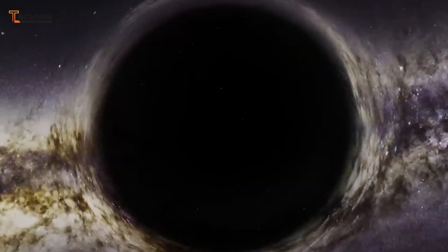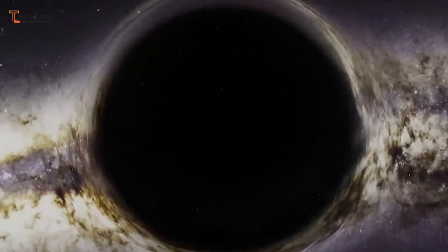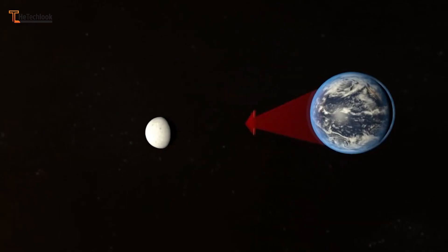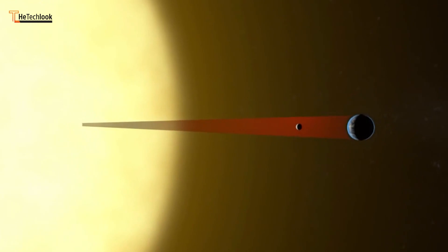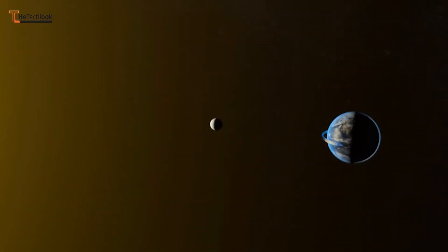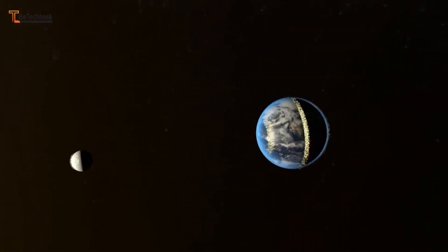Supermassive black holes at the centers of galaxies play a crucial role in shaping their evolution. Their enormous gravitational pull can affect the movement of stars and gases, leading to the formation or suppression of new stars.